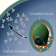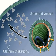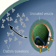Clathrin molecules — triskelions — dissociate, uncoating the vesicle. They will be recycled in new shapes called coated pits.